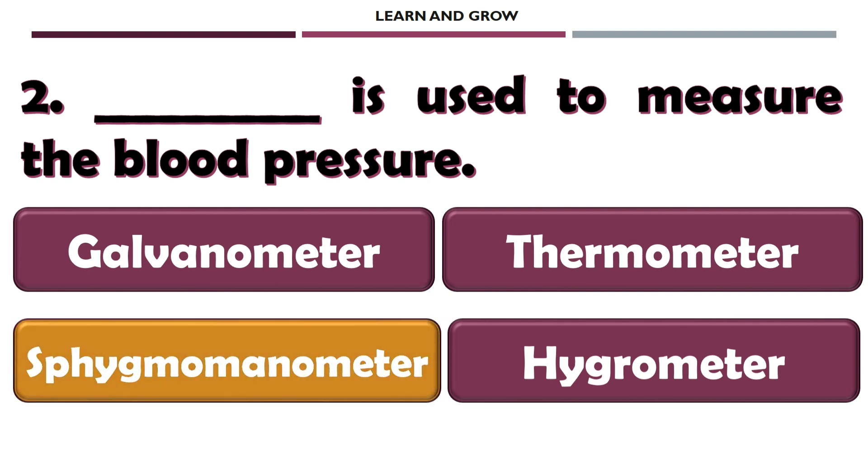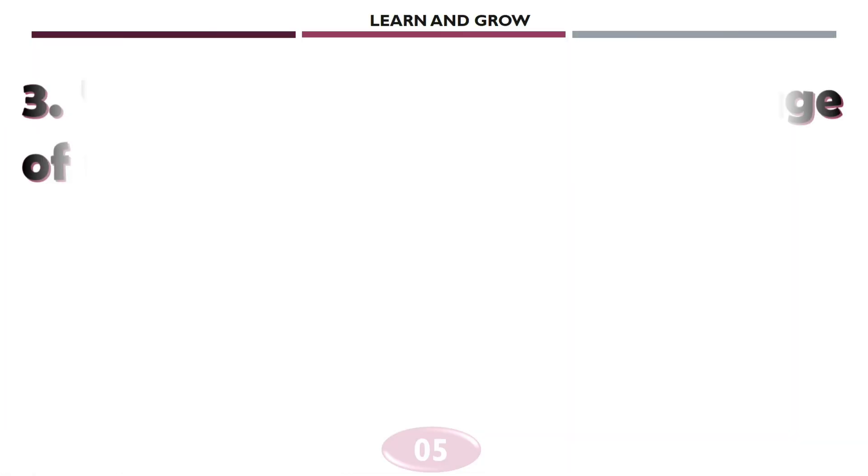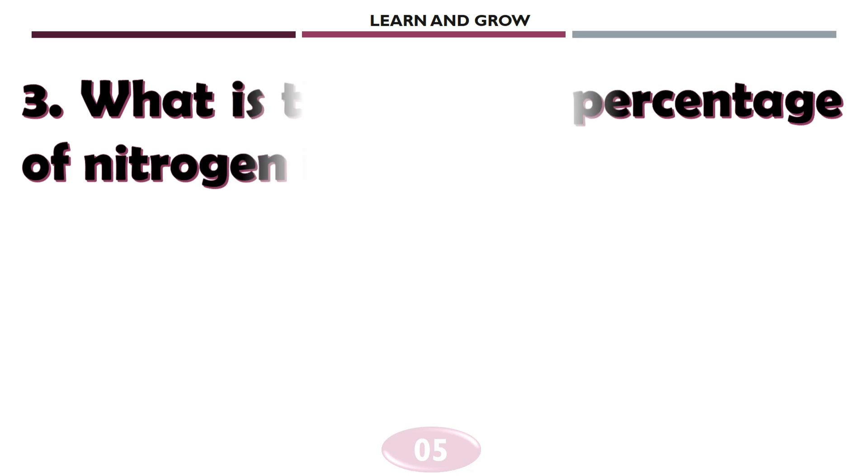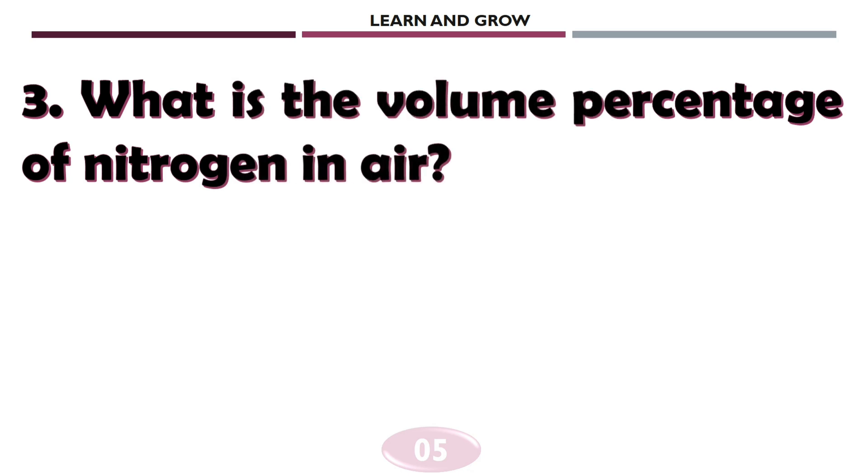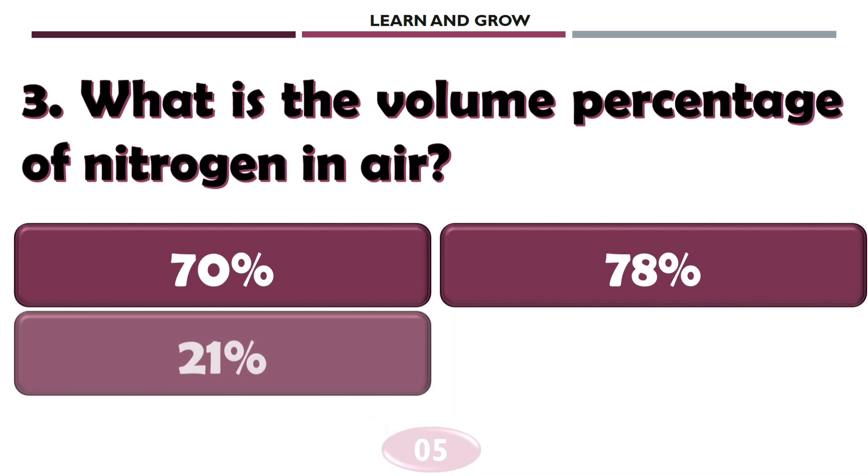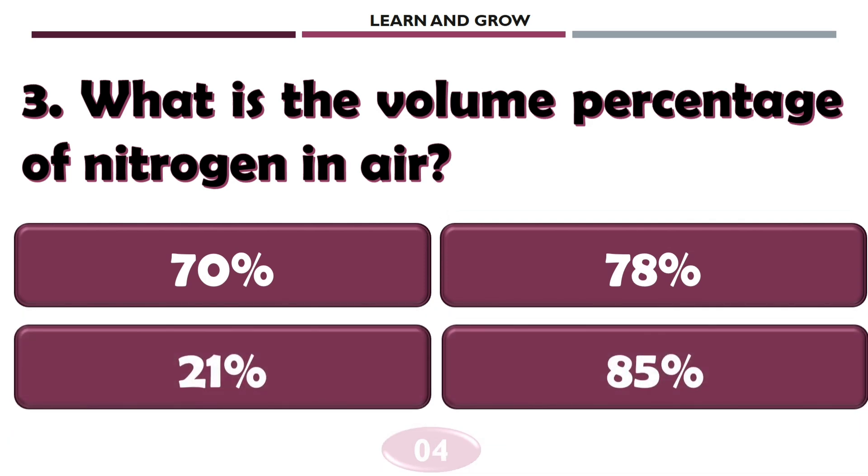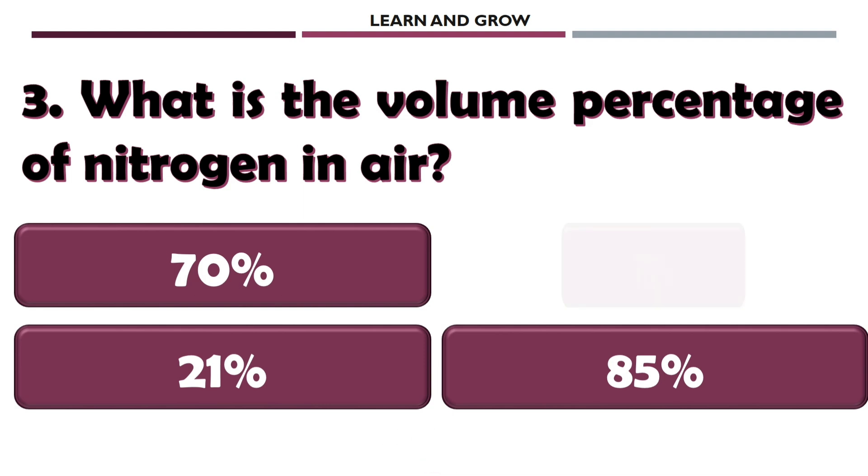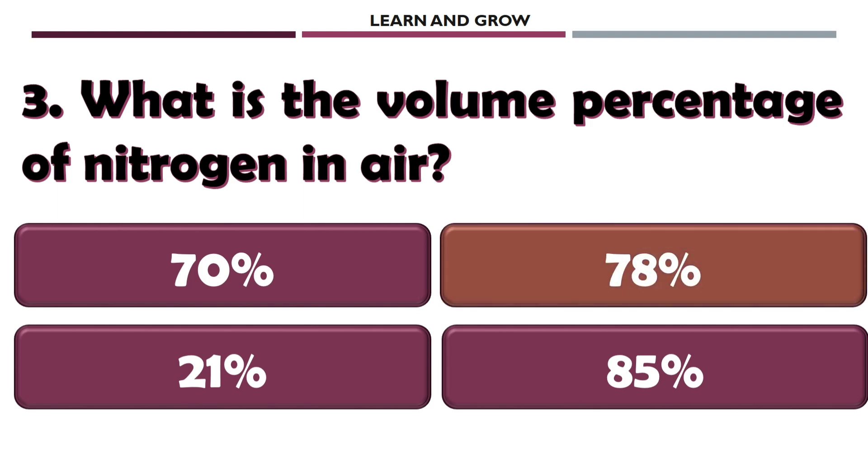The right answer is option C. What is the volume percentage of nitrogen in air? The correct answer is option B: 78 percent.